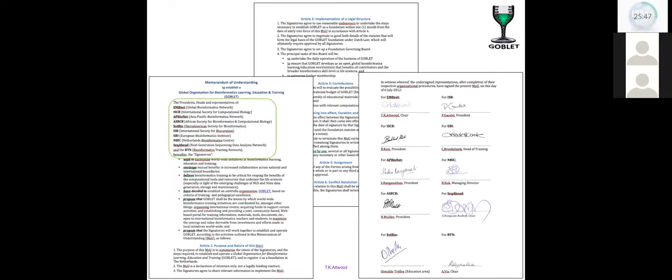The MOU proposed that GOBLET would coordinate worldwide bioinformatics training initiatives by, amongst other things, organising international events, acquiring funds to support various activities and providing a joint community-based web portal for training information, materials, tools, and so on, open to international bioinformatics teachers and students to maximise the synergy and value derivable from investments and efforts made in local initiatives worldwide.